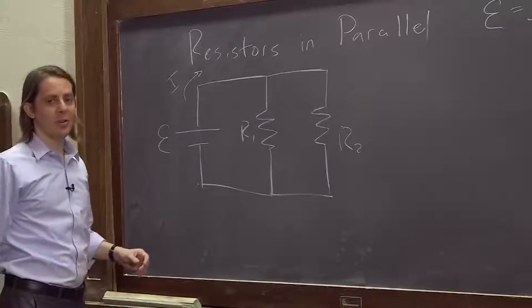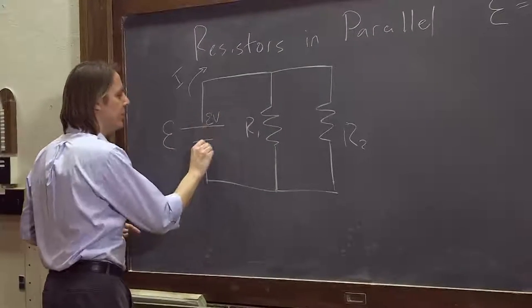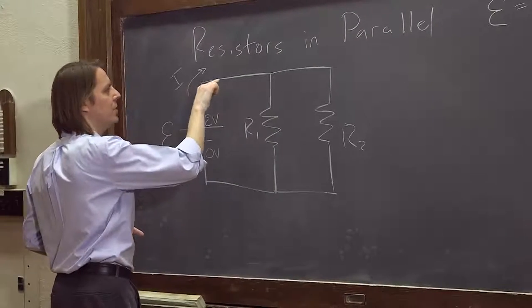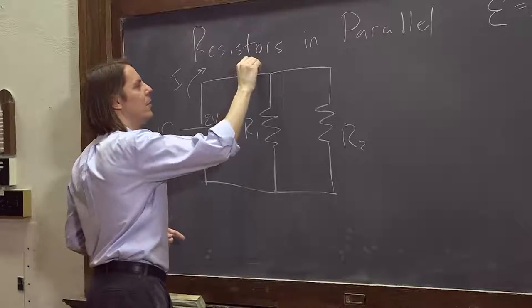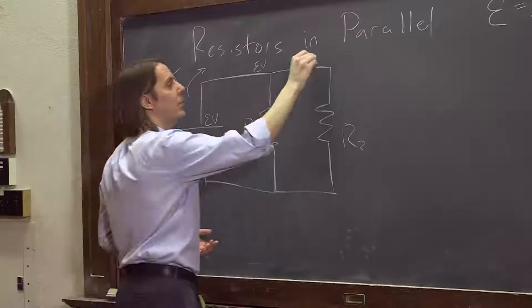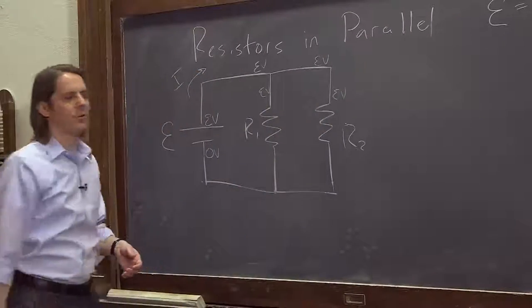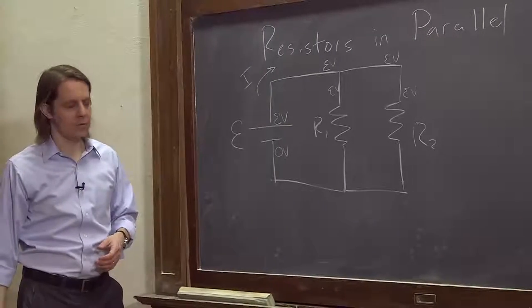Now, here it's sort of the opposite. Here, we know if this is at E volts and this is at zero volts, this is a wire, and this is at E volts, E volts, E volts. Here, we're still at E volts when it splits. And even after it splits, we're still at E volts in terms of potential. Until you get to the top of those resistors, you're still at E volts.